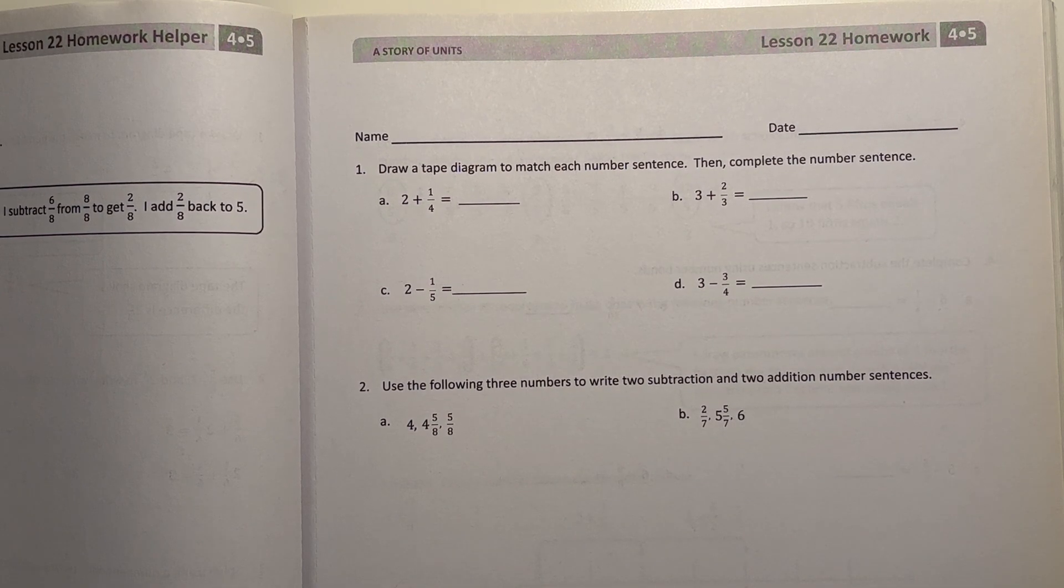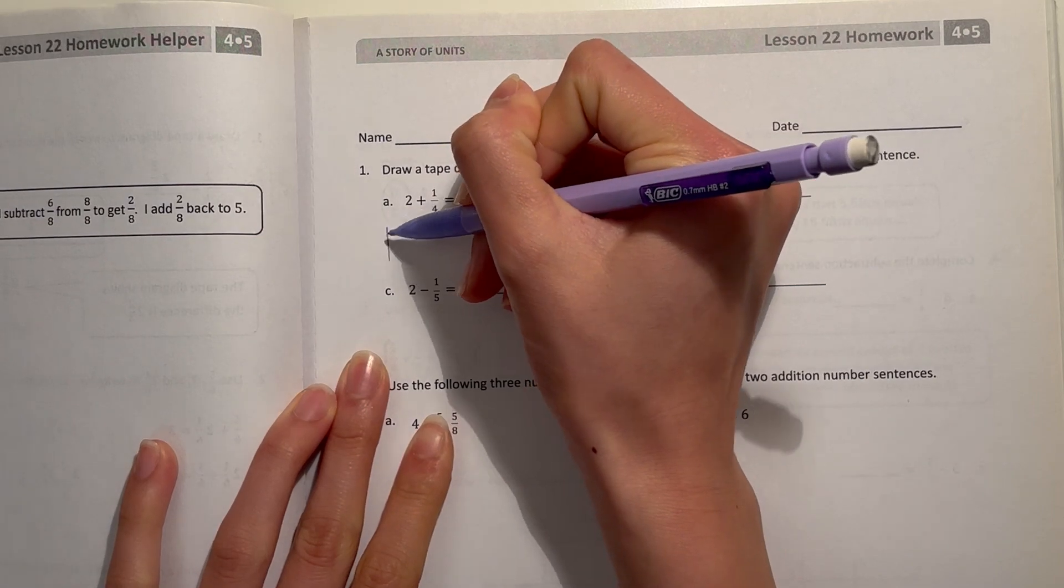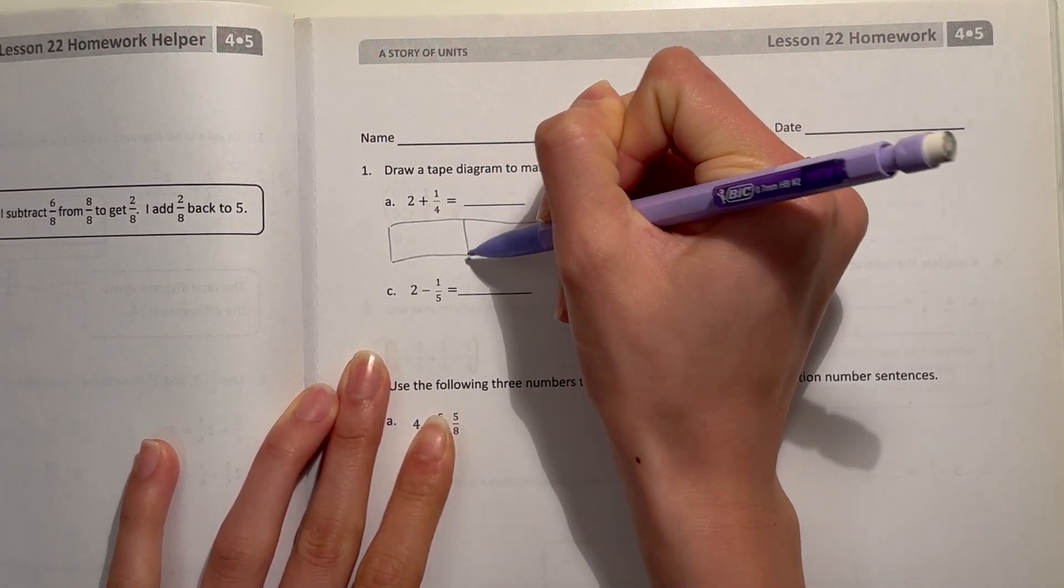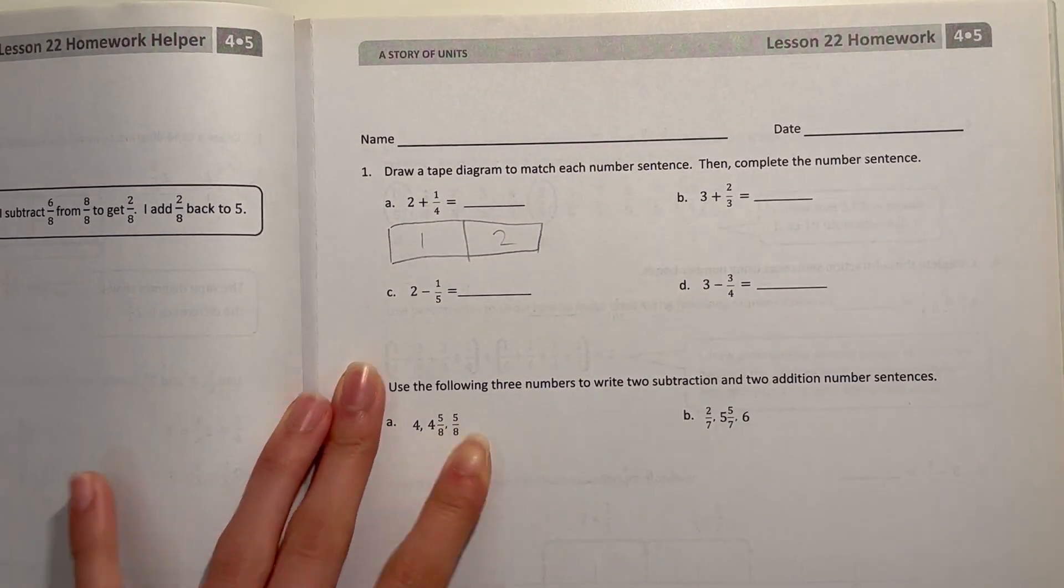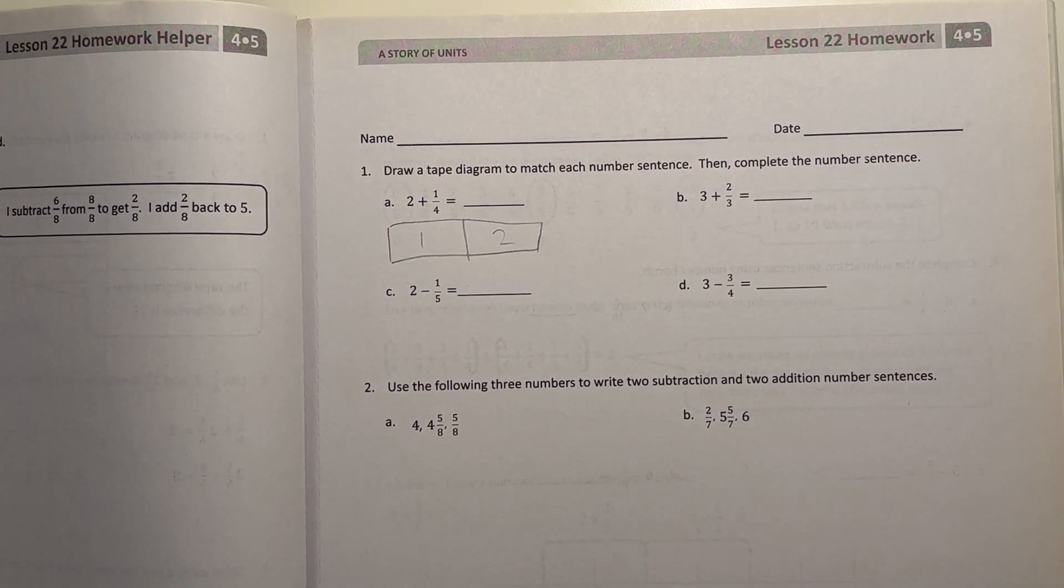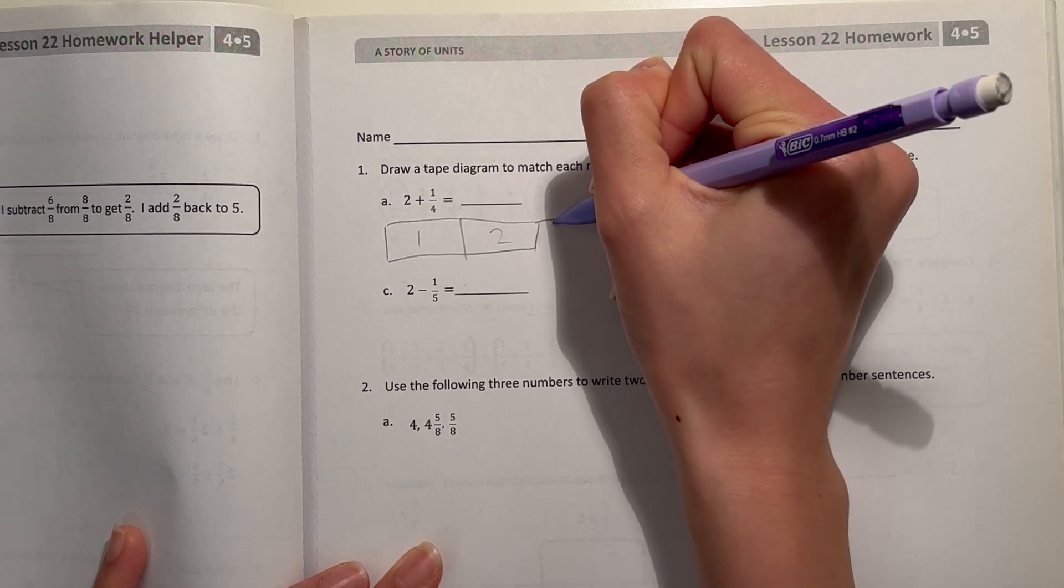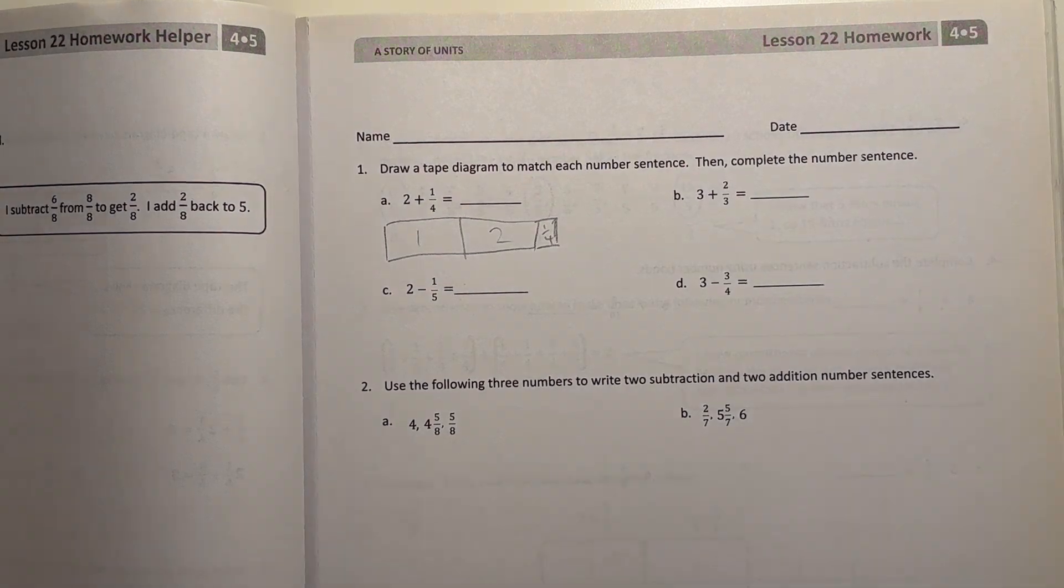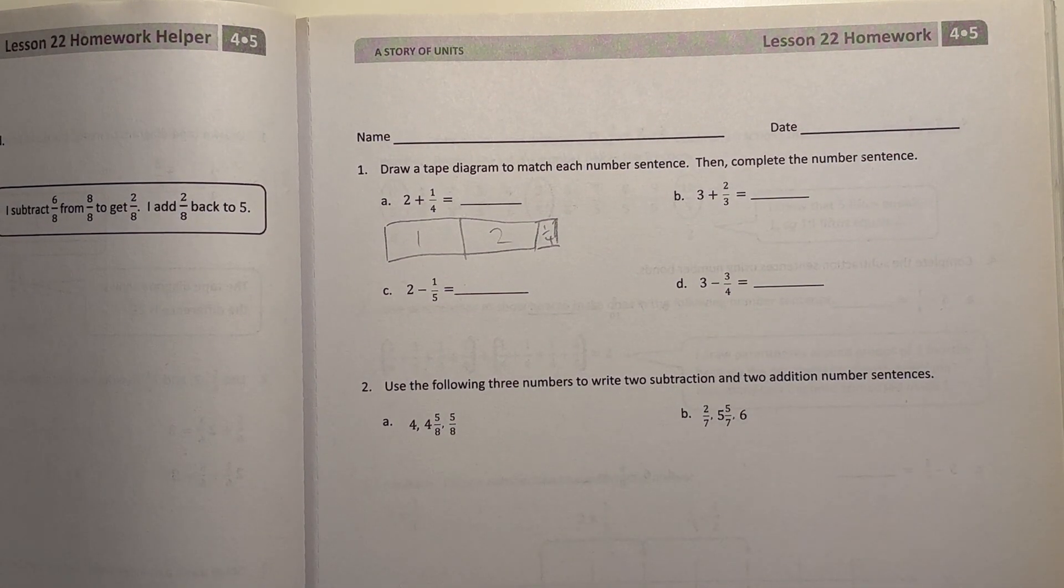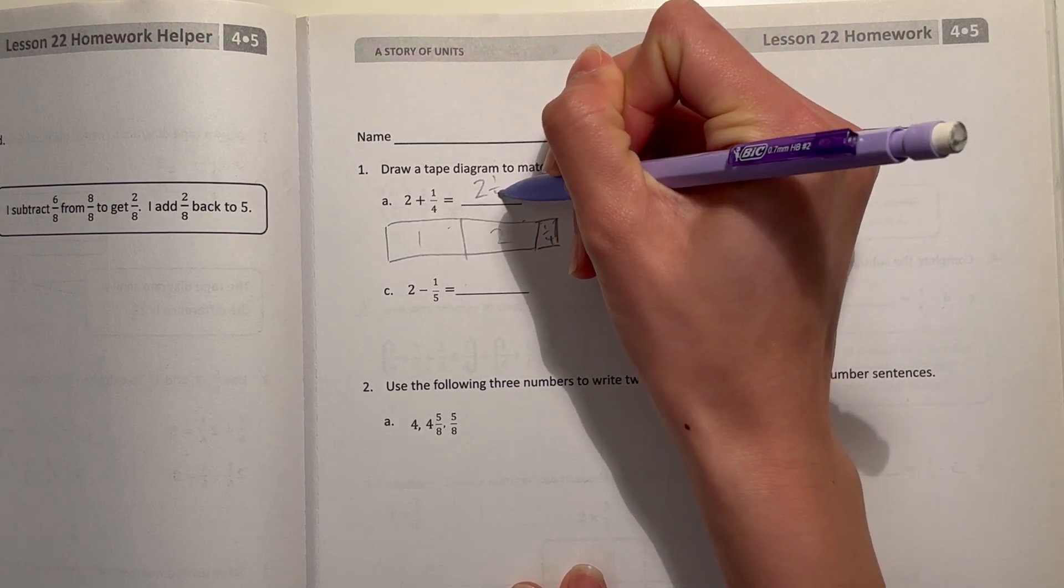All right, so this is 1, this is 2, and then plus 1 fourth. So now we're going to draw 1 fourth. That'd be like around this much. All right, so now we have 2 plus 1 fourth. That's 2 and 1 fourth.